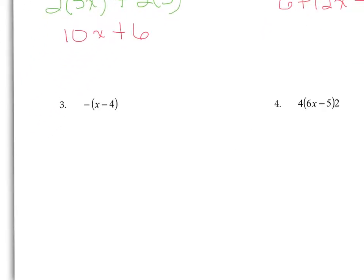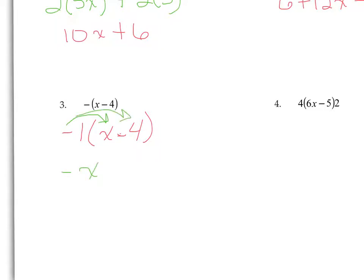On number 3, we have an interesting negative sign out here. This is just a representative of negative 1 because we don't usually write the 1 coefficient. So this really just means negative 1 times (x minus 4). When you multiply anything times negative 1, it really just changes the sign. So negative 1 times x is negative x, and negative 1 times negative 4 is positive 4.